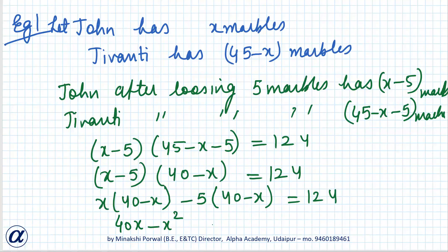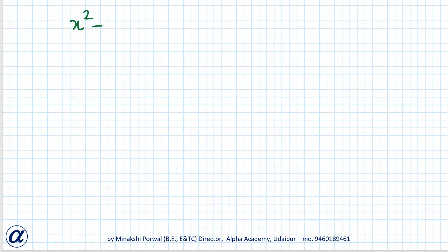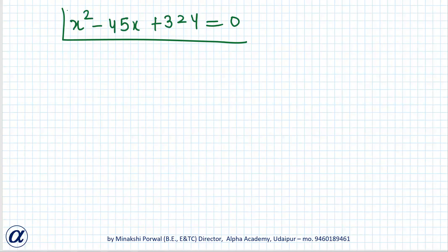Expanding: 40x minus x² minus 200 plus 5x equals 124. Taking everything to one side: x² minus 40x minus 5x plus 200 plus 124 equals 0. Rewriting: x² minus 45x plus 324 equals 0. We just need to frame the equation here; the solving part will come in the second exercise.